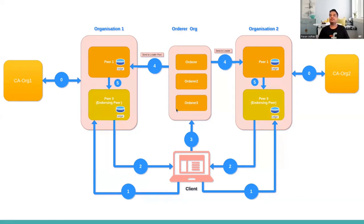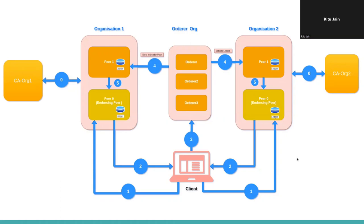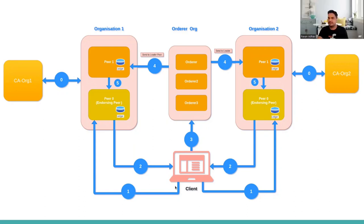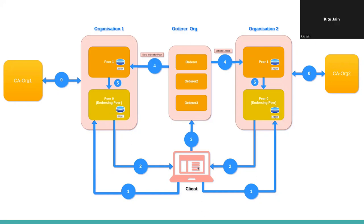A participant asks whether the client sends transactions to the orderer. Pavan clarifies: in the first phase the client sends the proposal to the peers. Once it gets sufficient endorsements, the client then sends to the orderer as well.